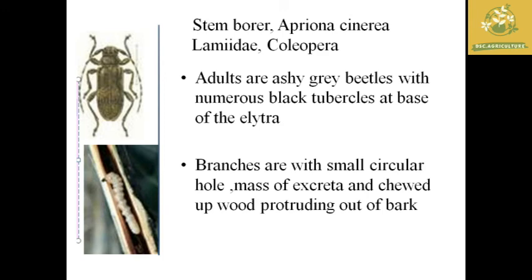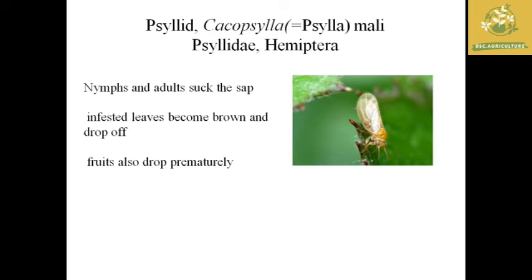The next pest is psylla, a sucking pest belonging to the family Psyllidae and order Hemiptera. The nymph and adult suck the sap, and infested areas become brown. This pest also causes premature drop of fruits due to its attacks.